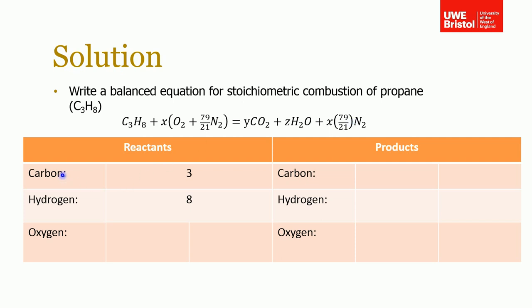We can start populating this table. We know there are three carbons on this side, eight hydrogens. How many oxygens are there? Well, there are 2X from this bracket. On the product side, there's Y carbons.